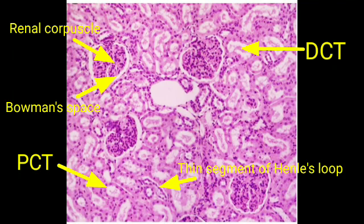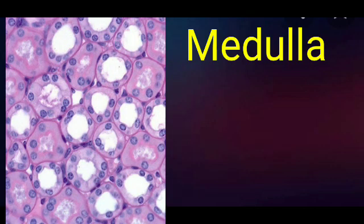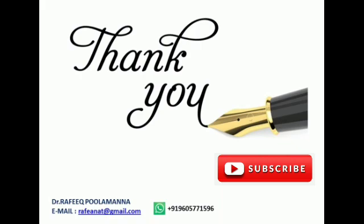In this picture, we can appreciate the renal corpuscles with Bowman's space, as well as proximal convoluted tubules, distal convoluted tubules, thin segments of the loop of Henle, and collecting ducts. This next picture shows the renal medulla, where renal corpuscles are not seen. Here, more collecting ducts are visible along with the thick segments of the loop of Henle.